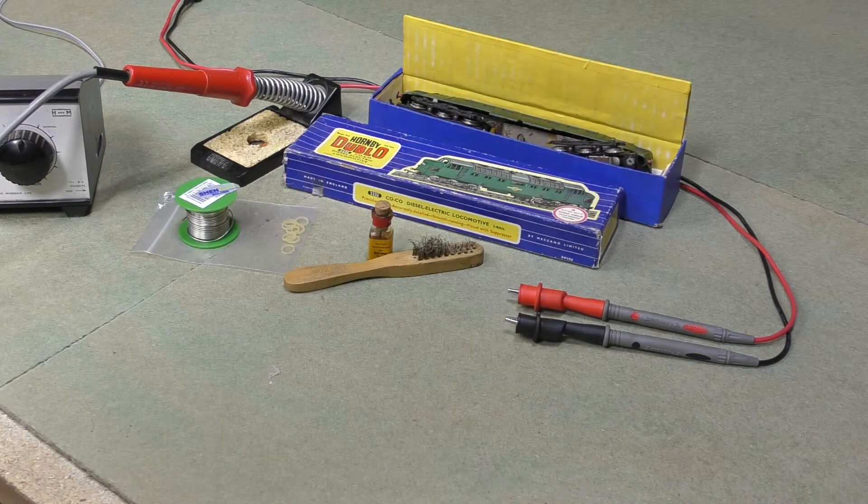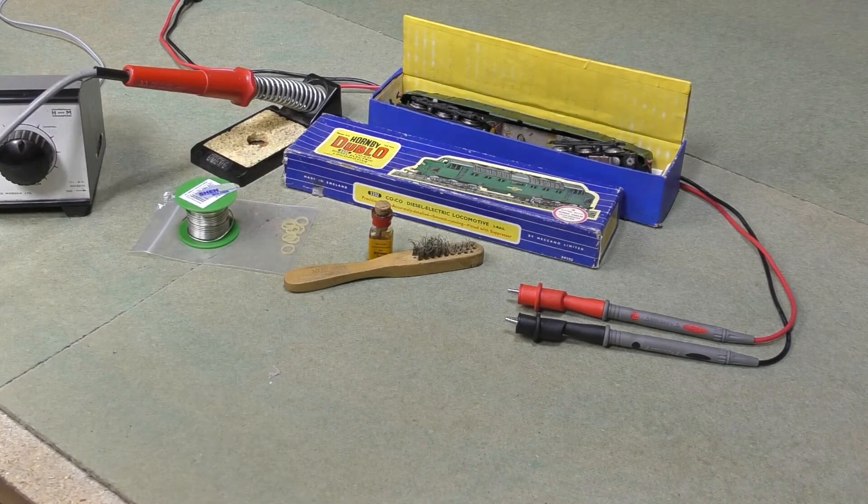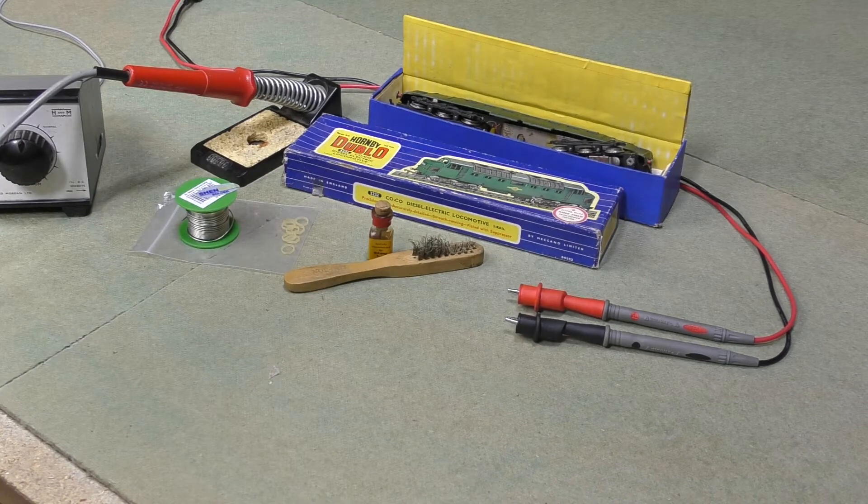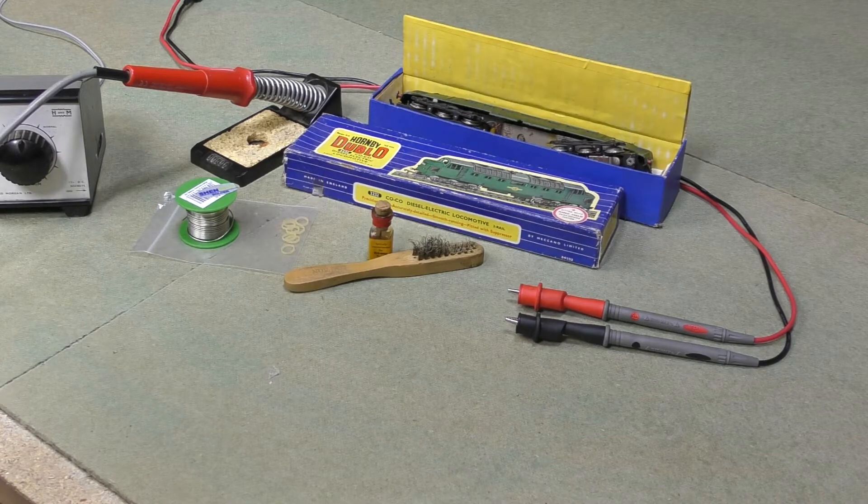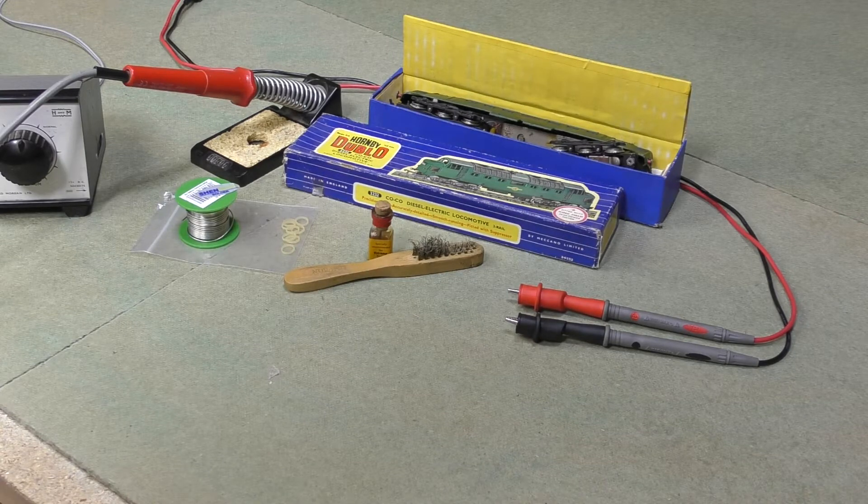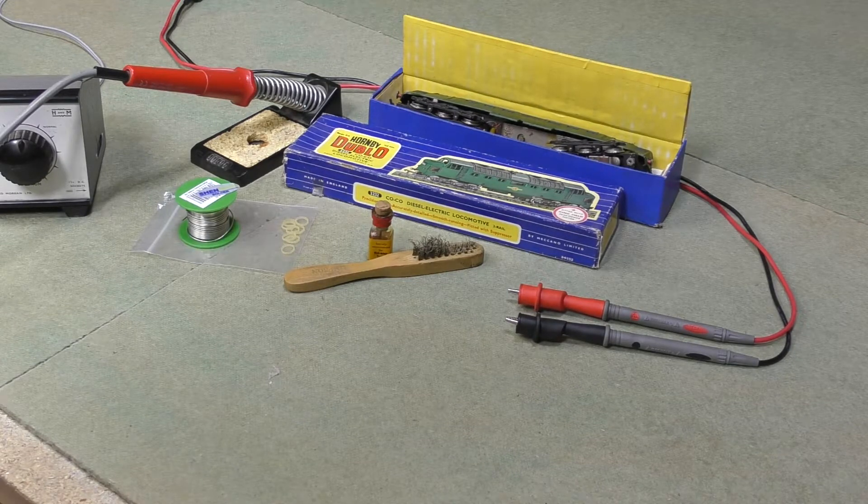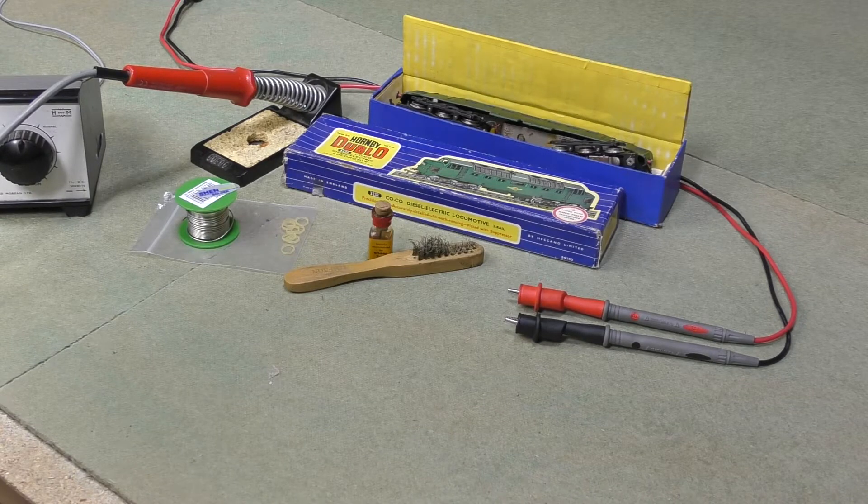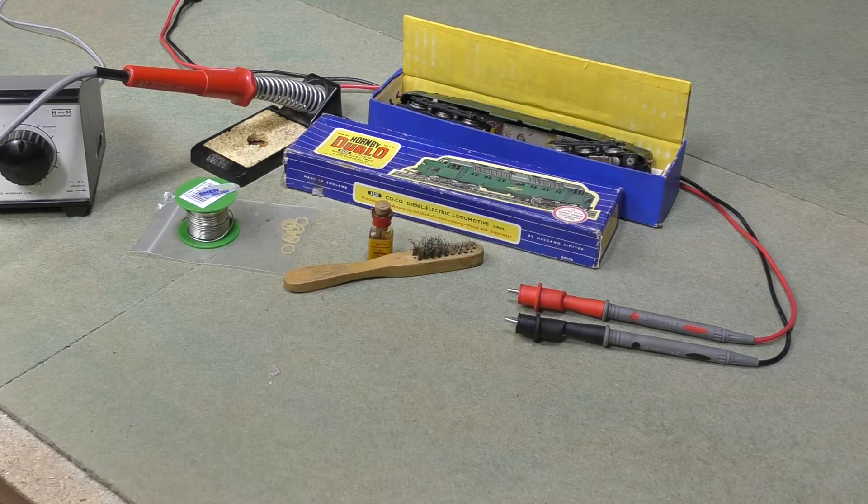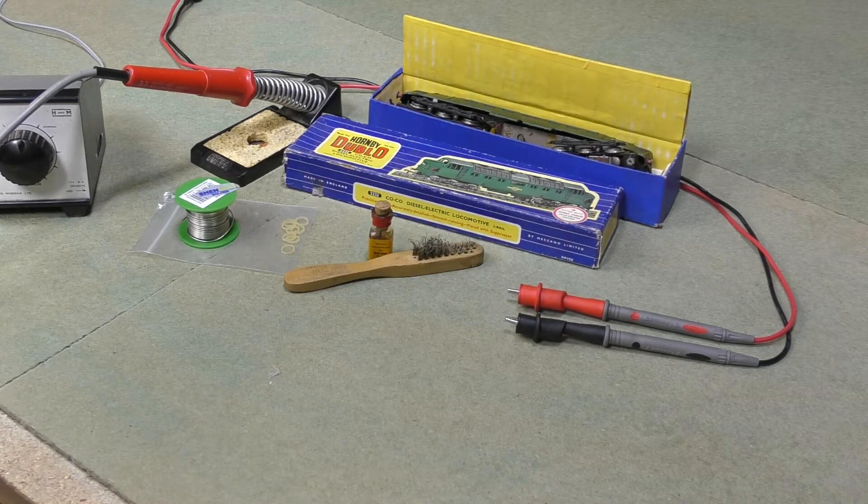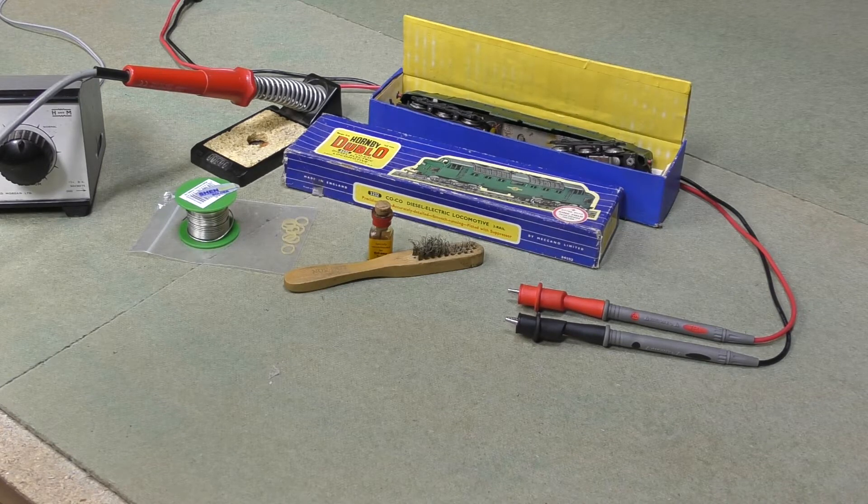Today we're going to have a look at this Hornby 00 3232 Coco diesel electric. I came across this while I was looking for Super 4 track because I'm building up an inventory of what I've got just to make sure I can build this layout. I thought it'd be good to bring this loco back to life, so we'll do a quick video on it and then run it around the 00 test track.